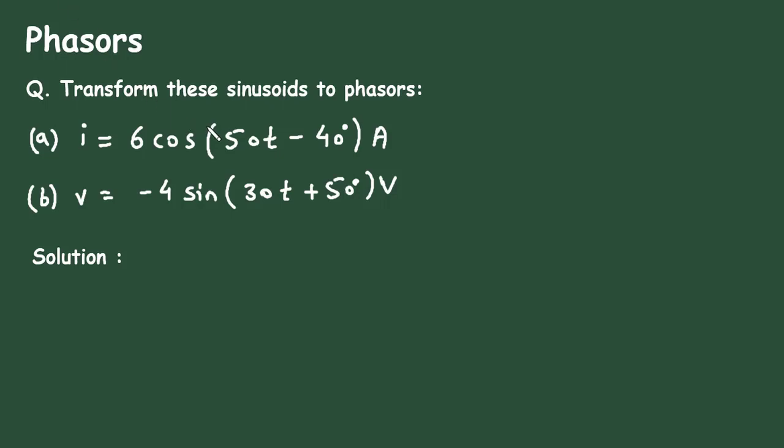In this video we will see an example on phasors. Transform these sinusoids to phasors. Here it is given in sinusoidal form and we have to convert this current and voltage into its equivalent phasors.